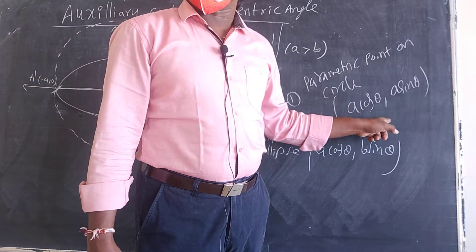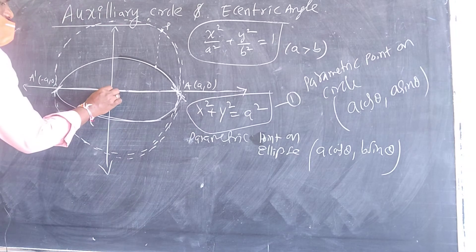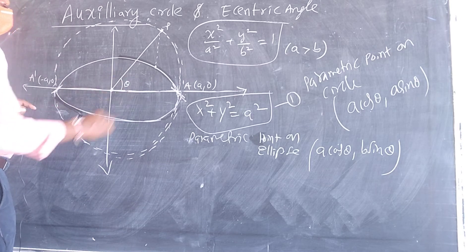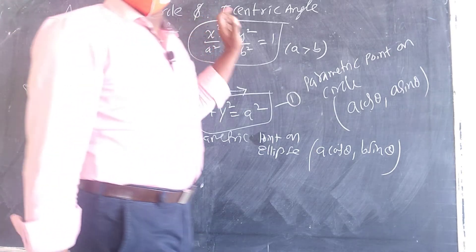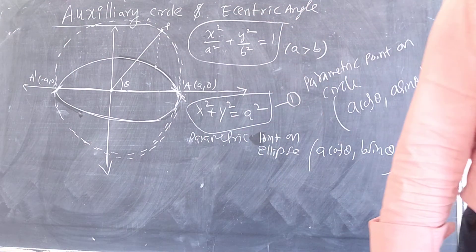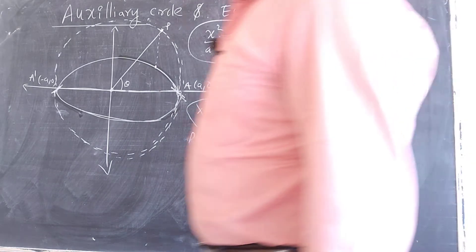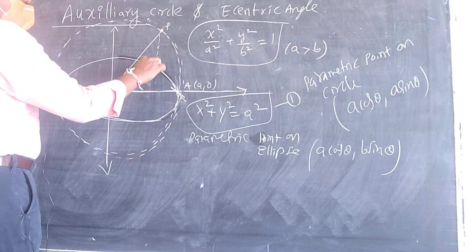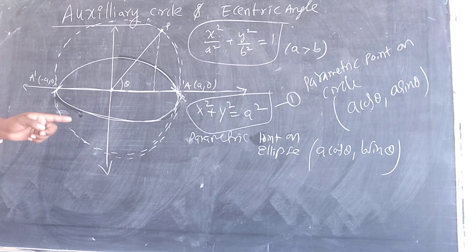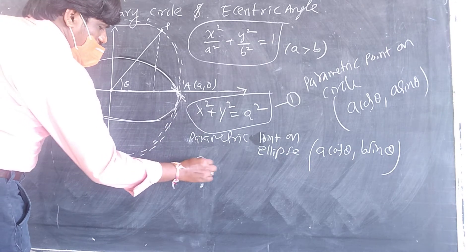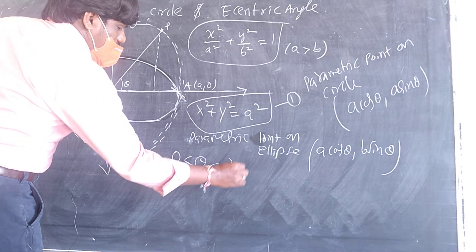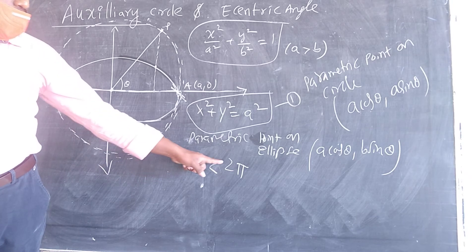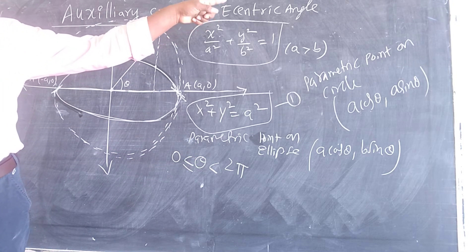The parametric point on the circle is (a cosθ, a sinθ). The angle made from the centre to this point — the angle with the positive direction — is called the eccentric angle. This angle is called the eccentric angle, and its value always lies between 0 and 2π.